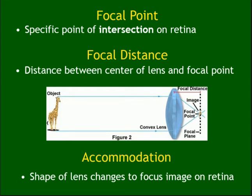The focal point is the point of intersection on the retina. When you see an object, the light converges through the convex lens, and the focal point — where everything intersects — should be at the fovea. The focal point of normal vision is the fovea.